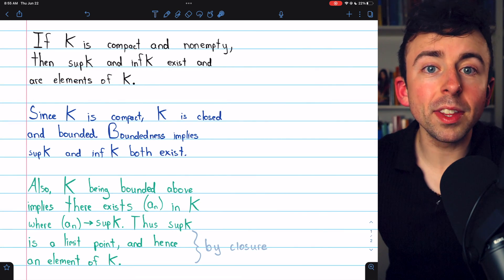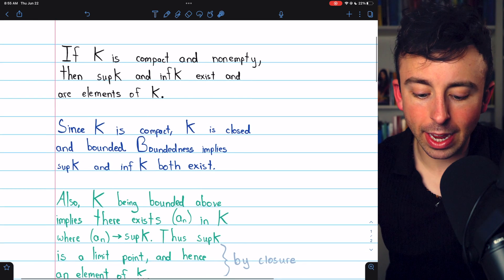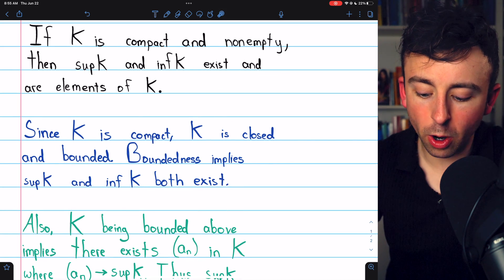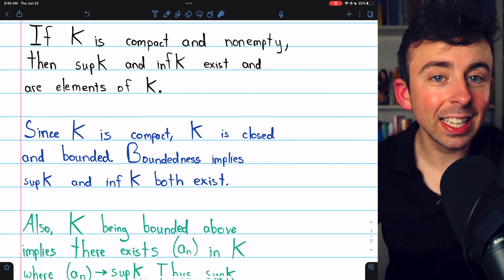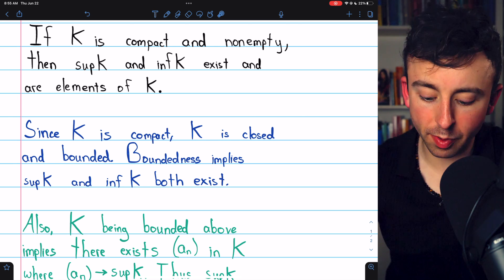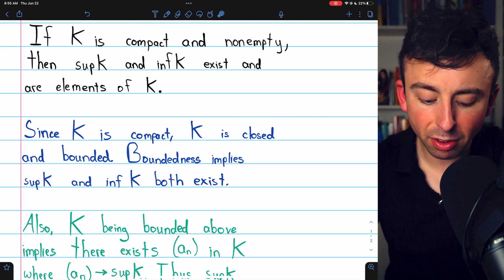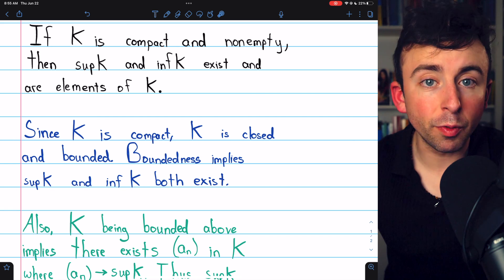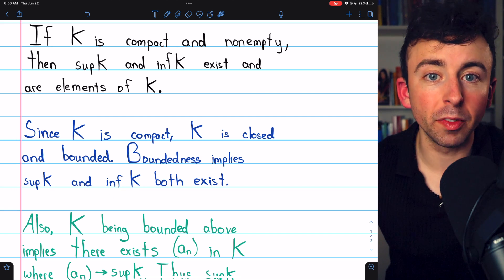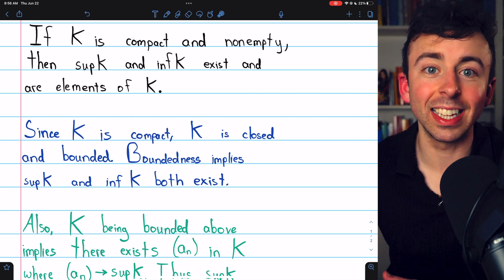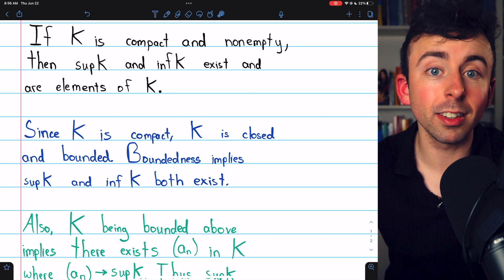Firstly, regarding the existence of the supremum and infimum. Since K is compact, we know K is closed and bounded. Again, link in the description to my lesson proving that. Boundedness implies that K has a supremum and it has an infimum. That's just the axiom of completeness. A bounded set has a least upper bound and a greatest lower bound.